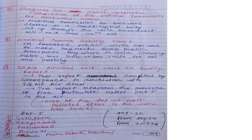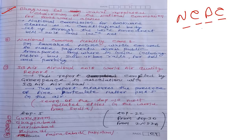Seventh current affair: Bhagwan Lal Seni appointed as Chairman of the National Commission for Backward Classes (NCBC). This is a constitutional body established under the 123rd Constitutional Amendment Bill 2018 (102nd Act), which set up a special commission for backward classes.